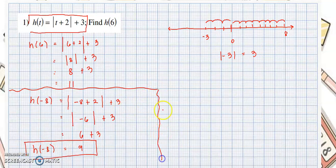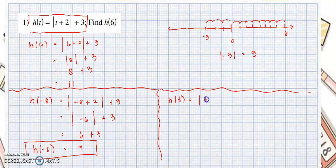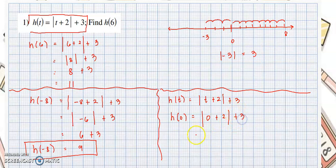Let me give one more example with this function. Rewriting: h of t equals the absolute value of t plus 2, plus 3. We want h of 0, so we substitute 0 for all values of t: absolute value of 0 plus 2, plus 3. That gives absolute value of 2, plus 3, which equals 2 plus 3 equals 5. So h of 0 equals 5.